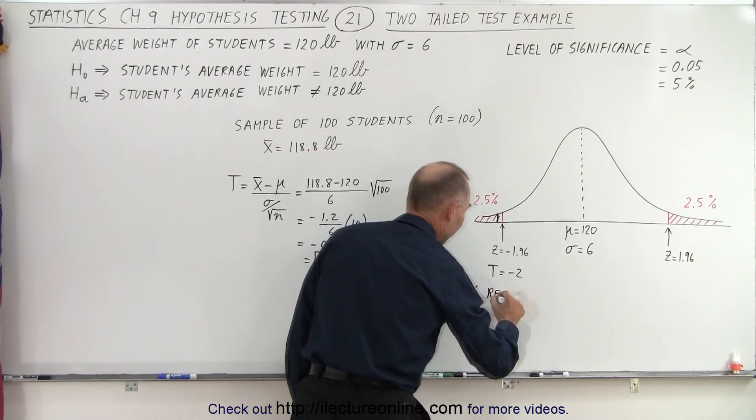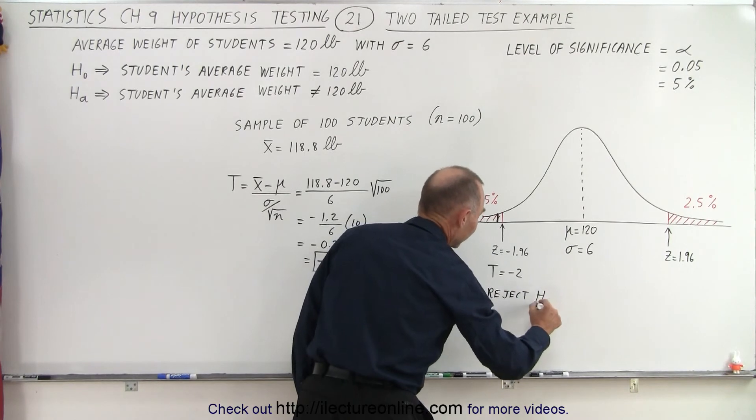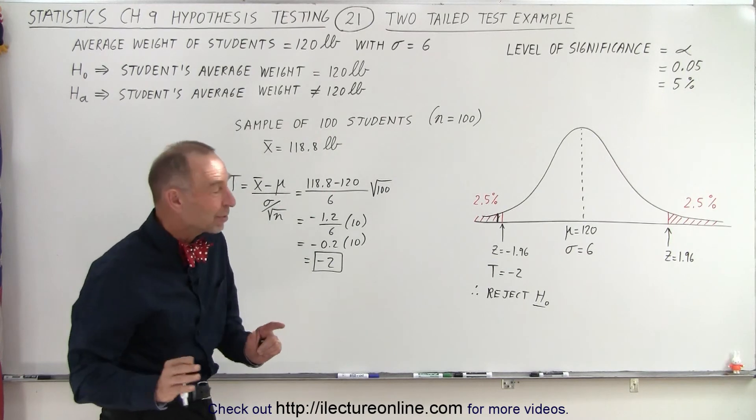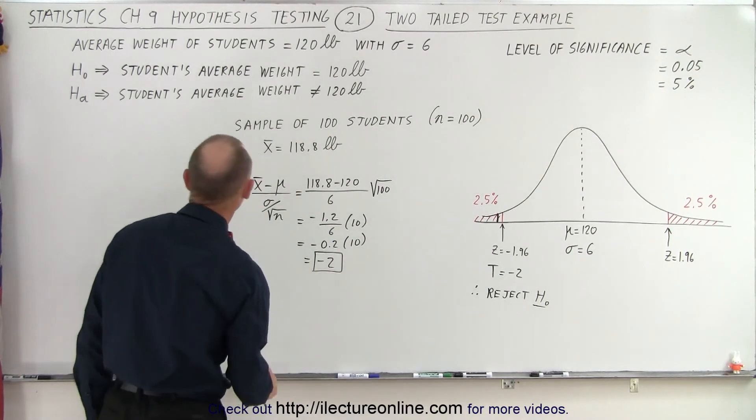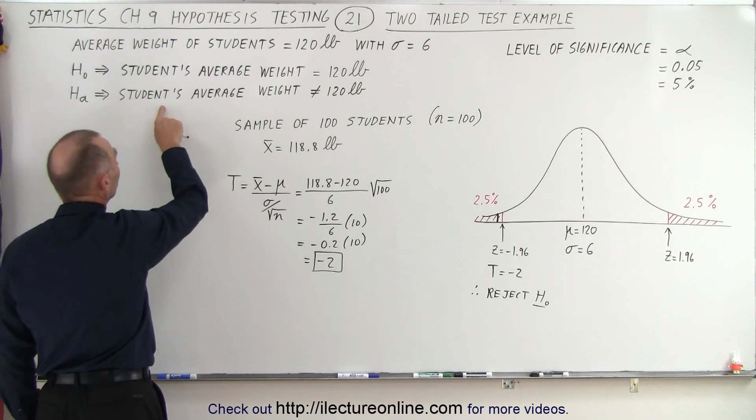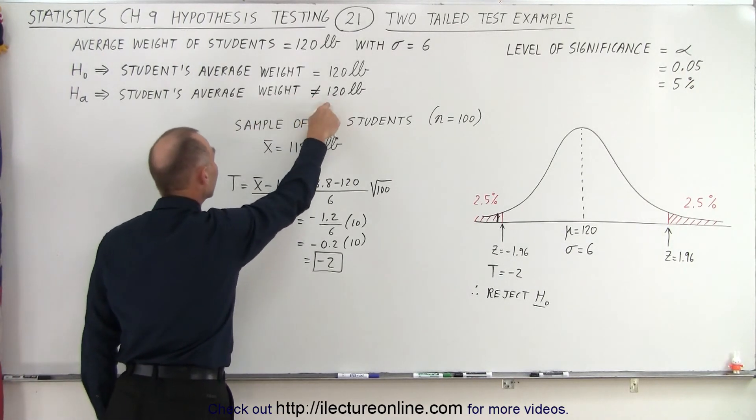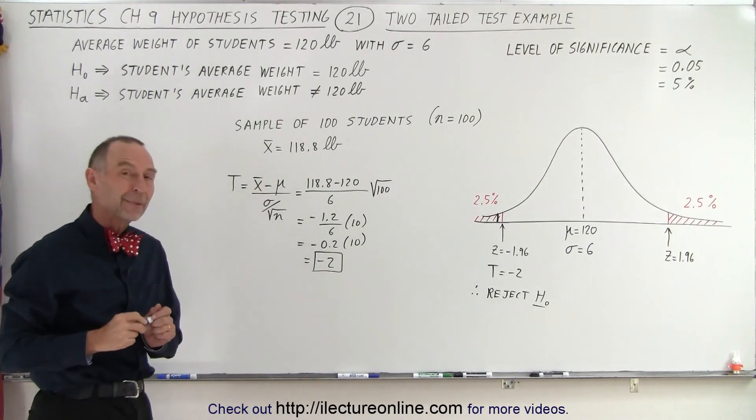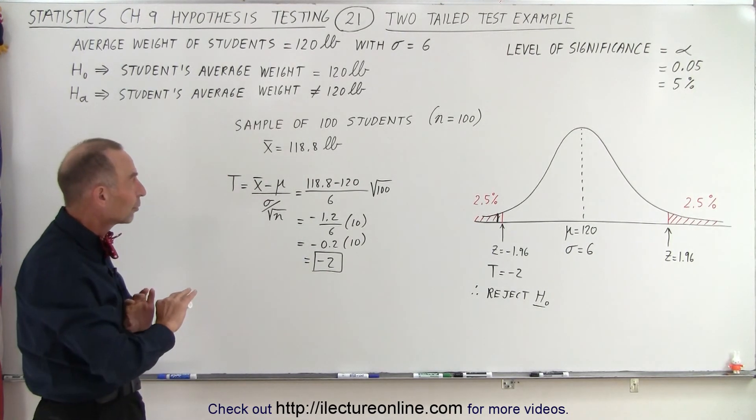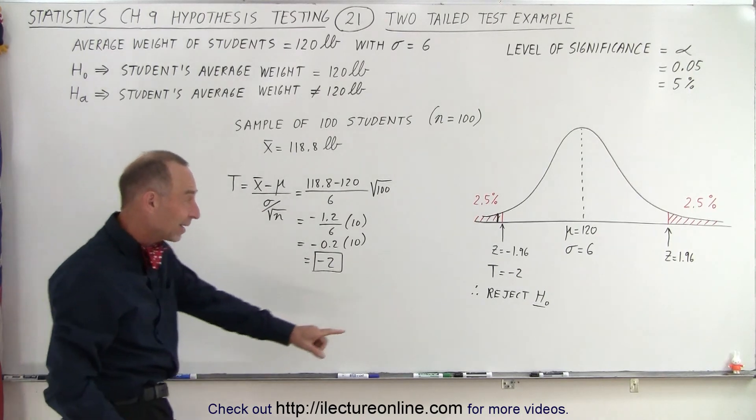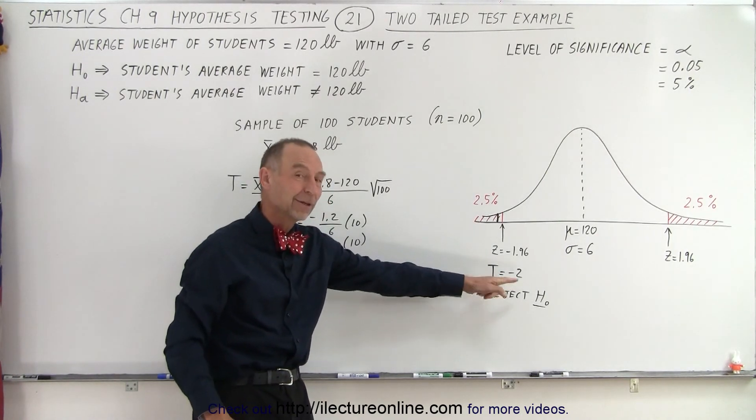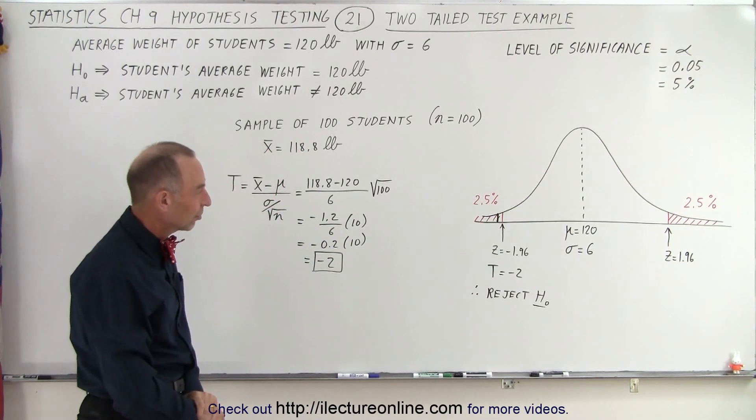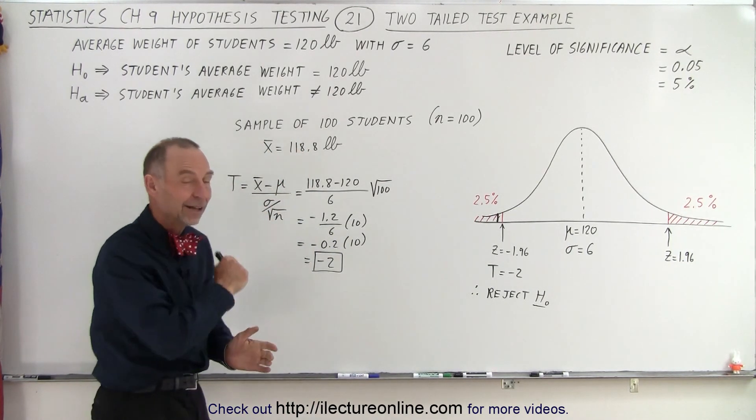we're going to reject the null hypotheses with a 5% level of significance. So we're 95% sure we're making the right decision. And we're going to claim the alternate hypothesis that students' average weight is not 120 pounds. It's probably closer to the average of the sample that we took. And therefore, we're going to reject the null hypothesis. Not by a lot, just barely, but enough with a 95% confidence level that we made the right decision. And that is how it's done.